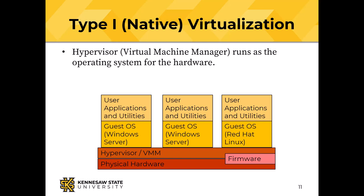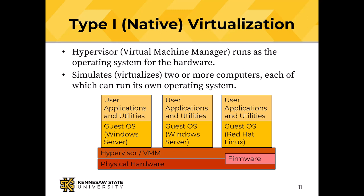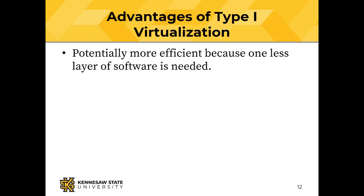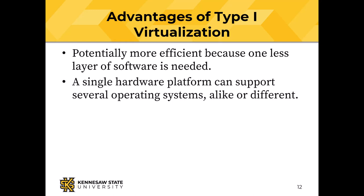Type one or native: the hypervisor, the virtual machine manager, runs on the bare metal. There is no underlying operating system — it instantiates some number of virtual machines which load and run guest operating systems. The only reason you would do this is if you're going to virtualize two or more computers. Type one is potentially more efficient — there is no layer of software between the hardware and the hypervisor. A single hardware platform can support several operating systems. With type two hosted, about one other operating system is the most you can get unless you have a really high-end processor.